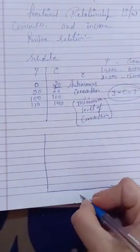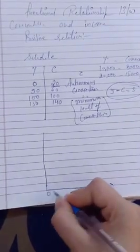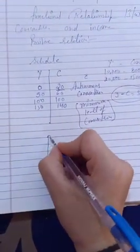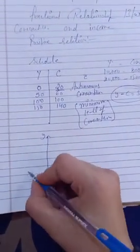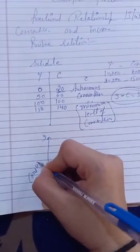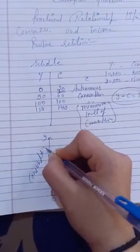Now let's look at the diagram. As I told you, on the x-axis we have income, and on the y-axis we have consumption. There is a specific reason why income is on the x-axis and consumption is on the y-axis.